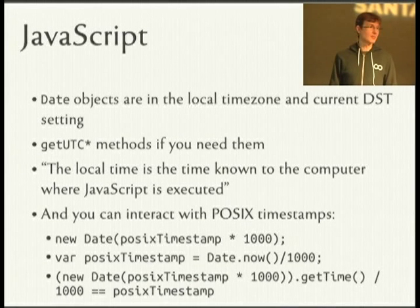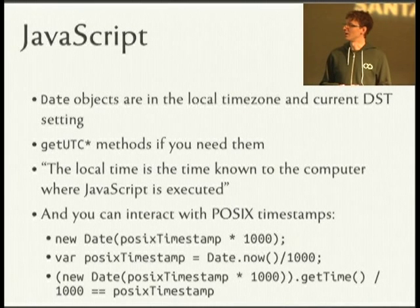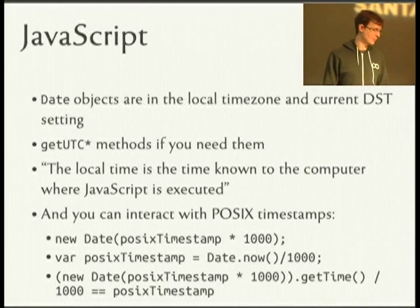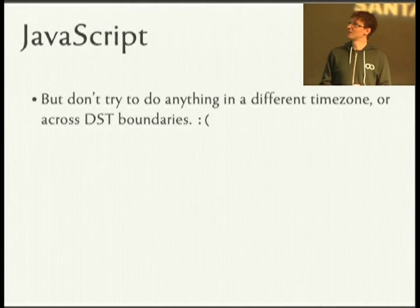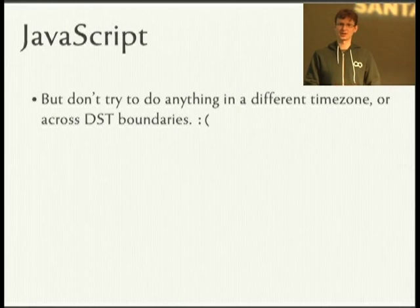JavaScript has date objects which know about their time offset and the current daylight savings time setting — unfortunately, that's all they know about. There are getUTC methods which return the right things, and internally it does know UTC so it'll get that part right. You can interact with POSIX timestamps: pass in the POSIX timestamp times 1,000, since JavaScript likes to think in milliseconds, and you can get the current Unix timestamp by dividing by 1,000. But it's really only useful for right around now, because JavaScript date objects only know about the current settings — they don't know about DST for future dates.